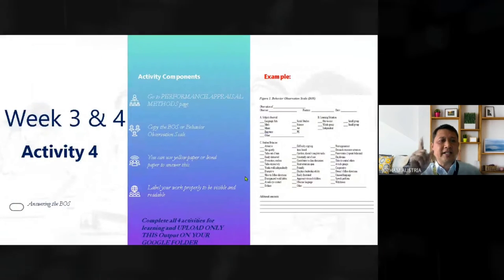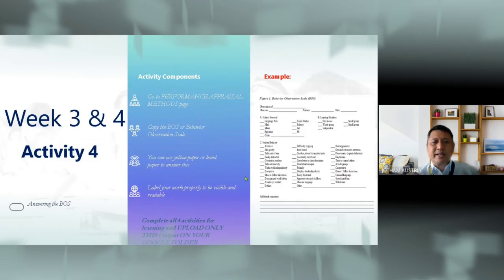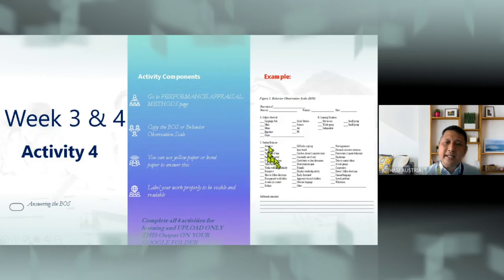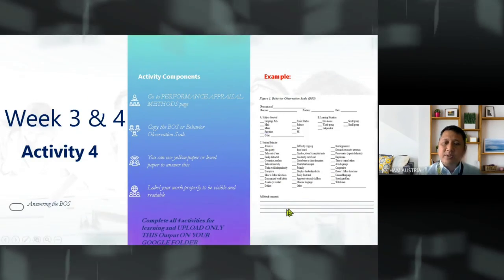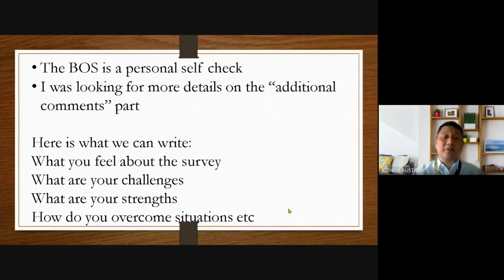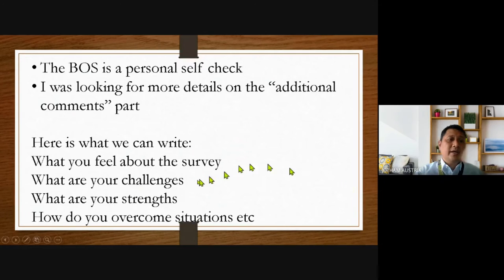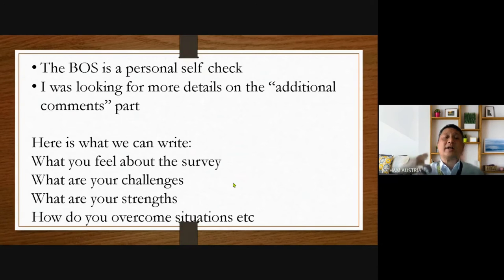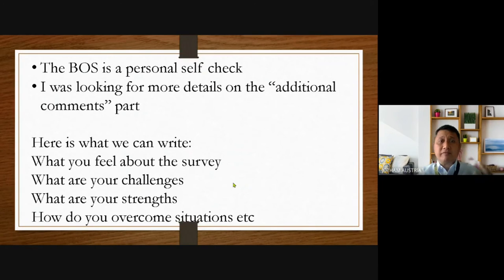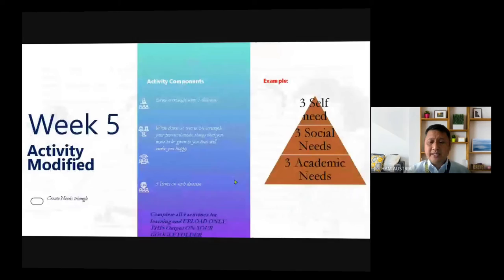Activity 3 and 4 — the performance appraisal. You just click the boxes and put some additional notes. I'm looking for additional notes because I need to fully understand why you checked those. For example, things you can write in the additional notes: what you feel about the survey, what are your challenges, what are your strengths, and how do you overcome situations. 50 words is fine, but you have to level up.